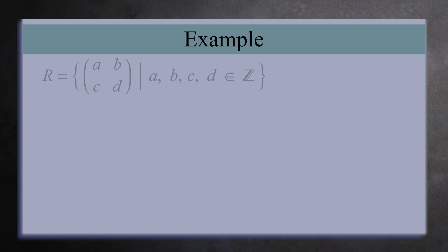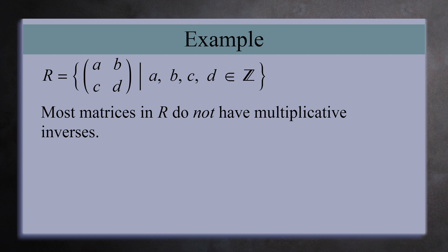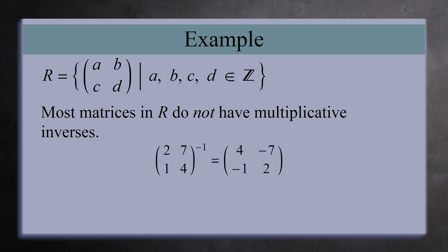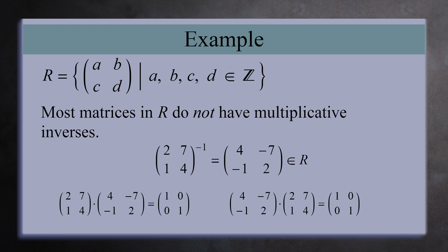As a final example, look at the ring of 2 by 2 matrices with integer entries. Most of these matrices do not have an inverse under multiplication. For example, the inverse of the matrix [1, 2; 3, 4] is the matrix [negative 2, 1; 3/2, negative 1/2], which is not in the ring because two of the entries are fractions. But look at the matrix [2, 7; 1, 4] — its inverse is [4, negative 7; negative 1, 2], which IS in the ring. Their product is the identity matrix regardless of order, so this matrix is a unit.